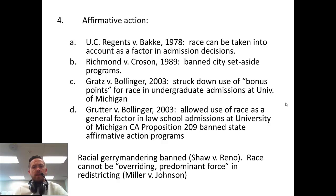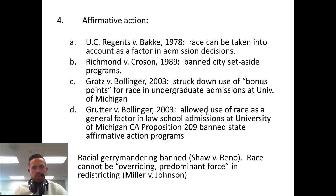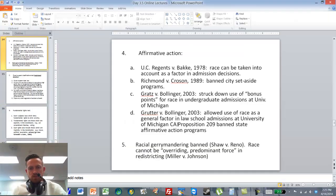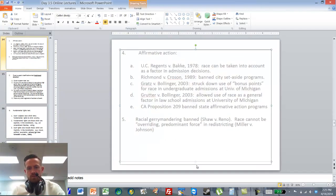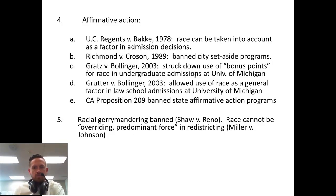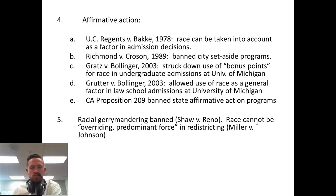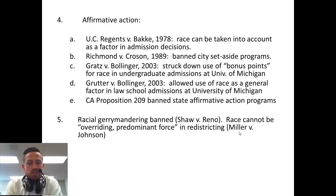In Grutter v. Bollinger in 2003, it allowed the use of race as a general factor in law school admissions. In the Bollinger cases, race could be used, but it couldn't give applicants a whole bunch of points or be a significant deciding factor. In California, Proposition 209 banned state affirmative action programs, but that was later overturned by lawmakers. Race cannot be considered when drawing district boundaries, because that could be used to reduce the power of certain groups of people.